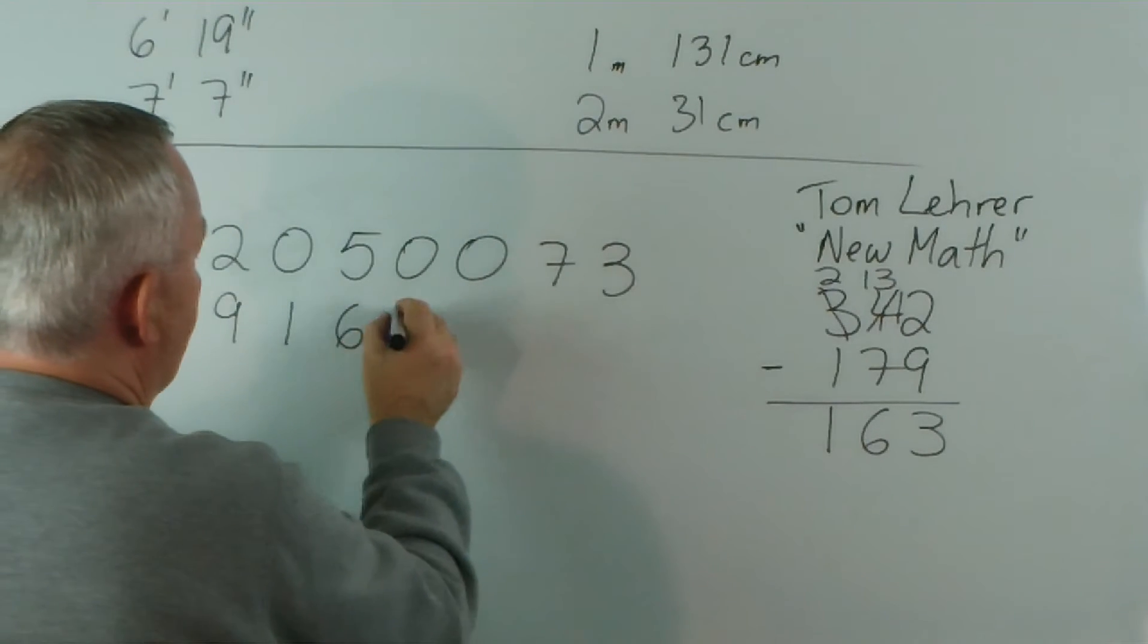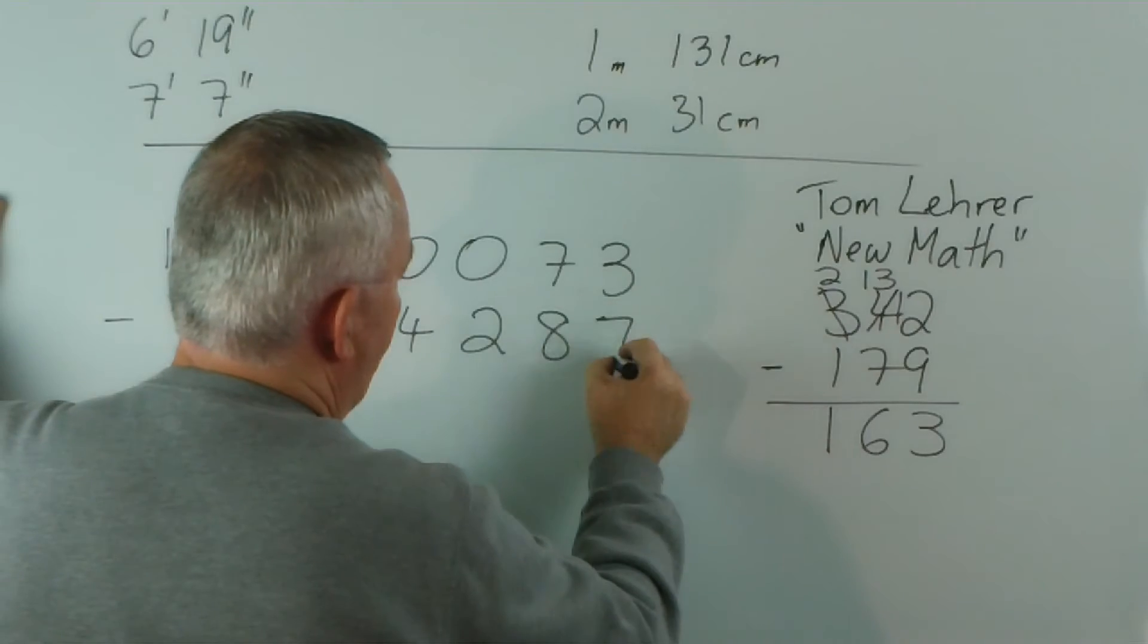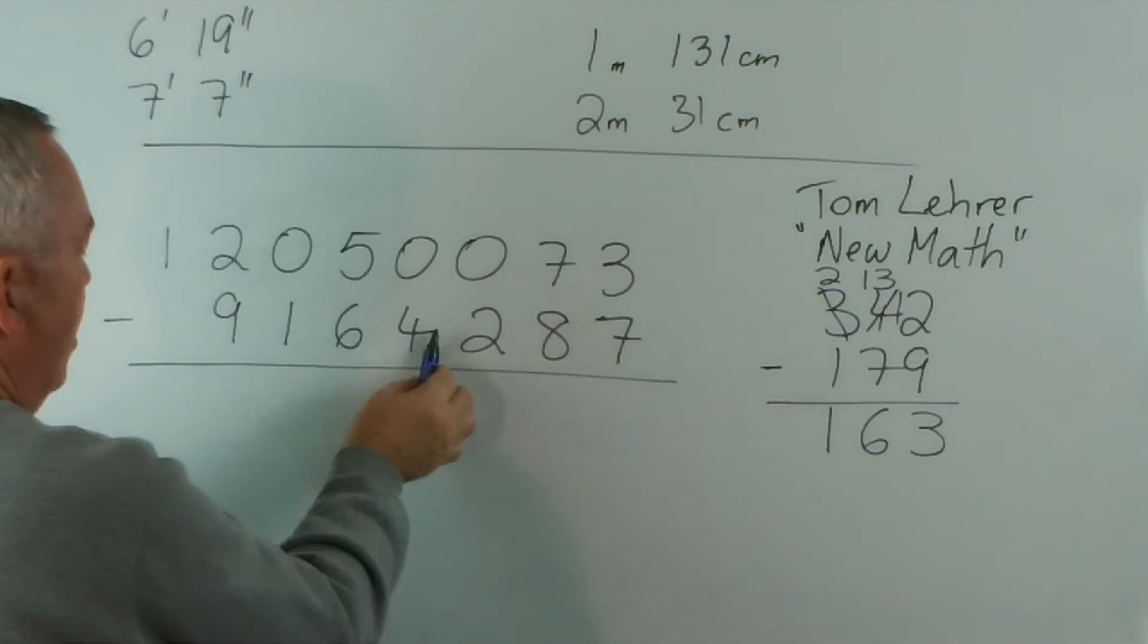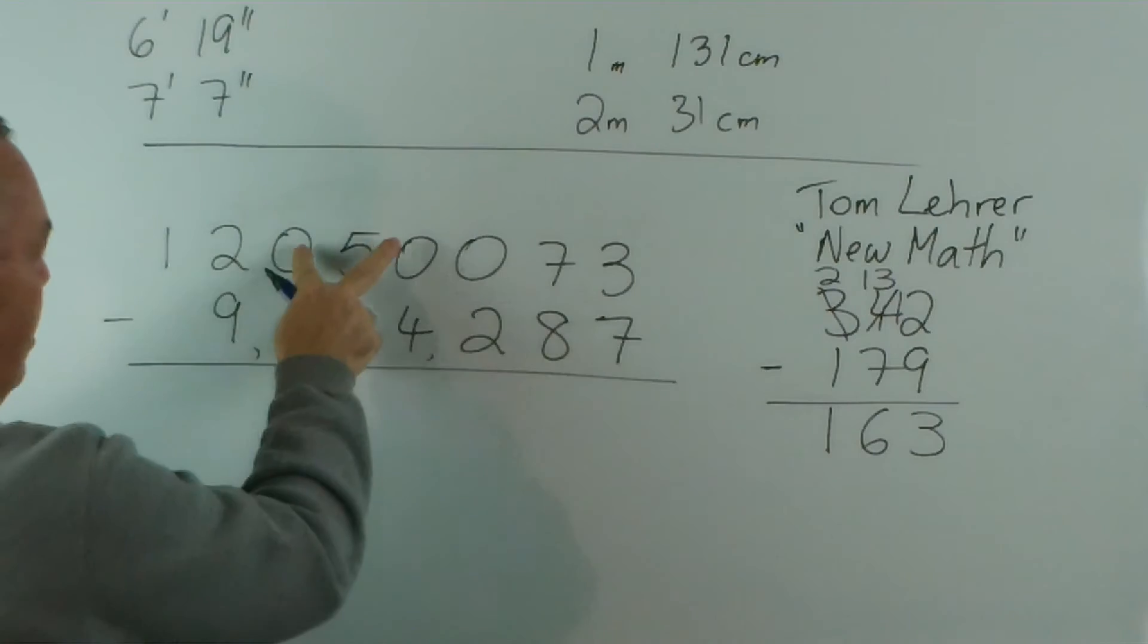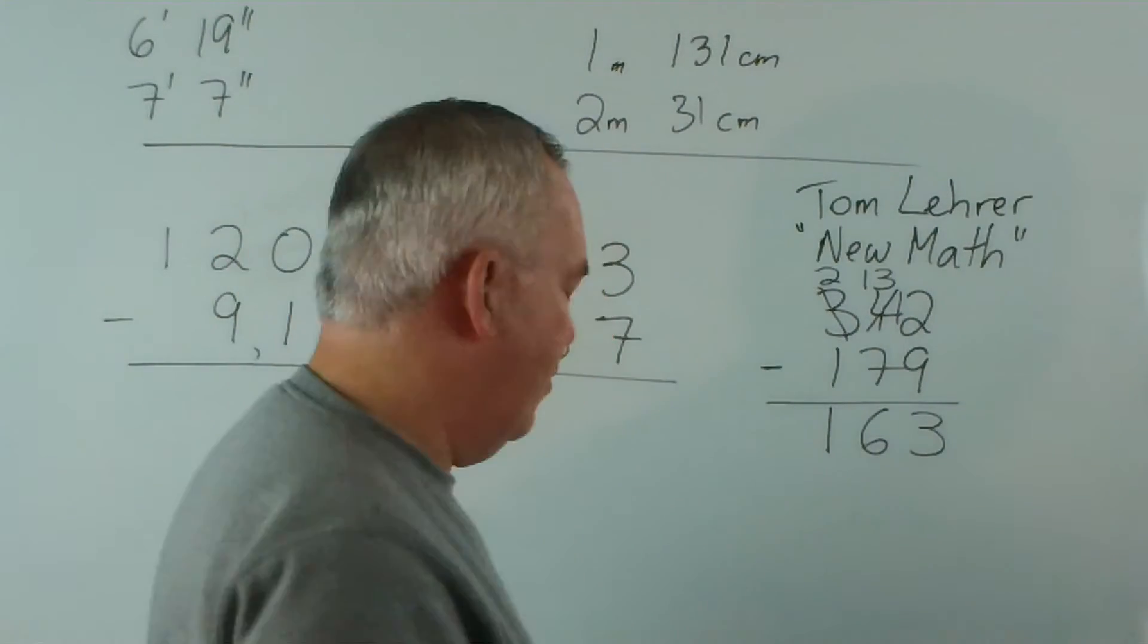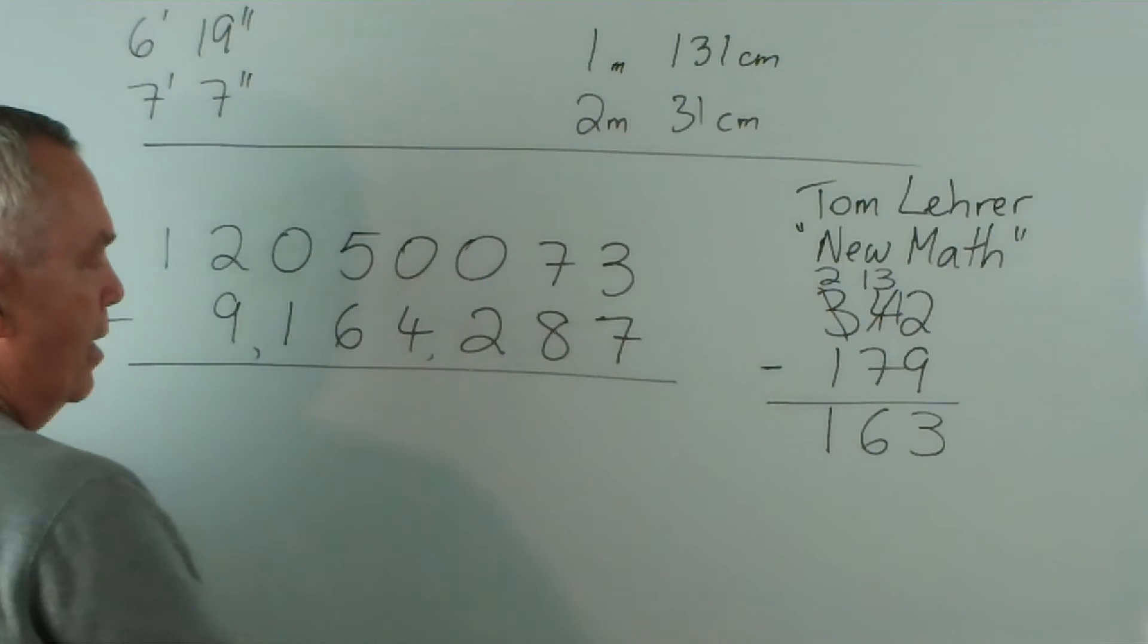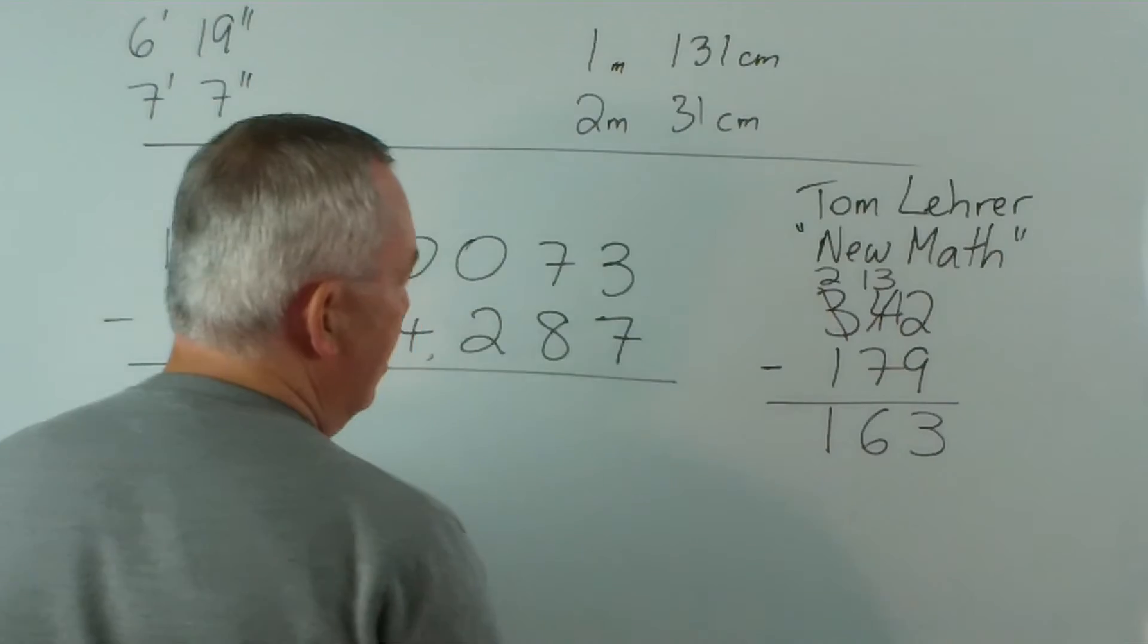minus 9, 1, 6, 4, 2, 8, 7. Now, this is a large subtraction. If we do these in bundles of 3, you can see we're up in the millions. So, 12 million, 50,073 and so forth. Let's see how this subtraction is accomplished using this method.